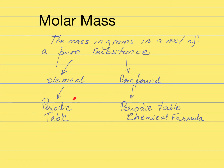The molar mass of an element is the atomic mass of that element — which is found in the periodic table — expressed in grams. For compounds, you're going to need the periodic table and also the chemical formula of that compound. It doesn't matter if the compound is covalent or ionic because you're going to be following the same steps.